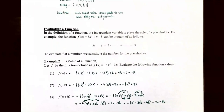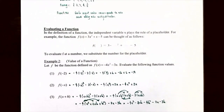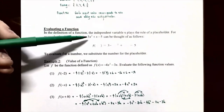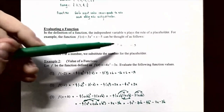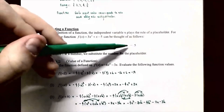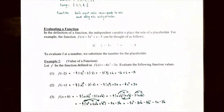Now that we know about function notation, we can describe a function using a formula. When evaluating a function, we want to find the output value for a specific input x. Using the formula f(x) = 3x² + x − 5, the independent variable x is a placeholder — you take the input value, square it, multiply by 3, add the input value x, and subtract 5. This process is called evaluation of a function at an x value.